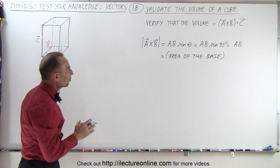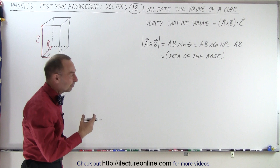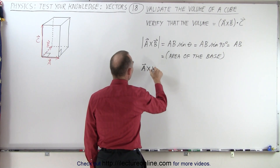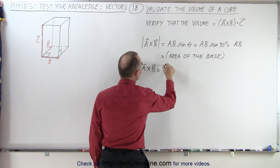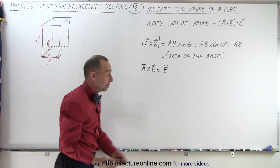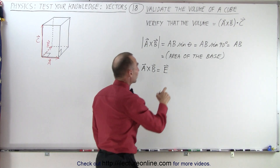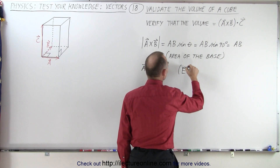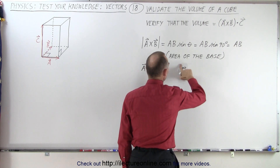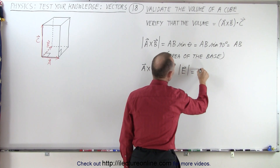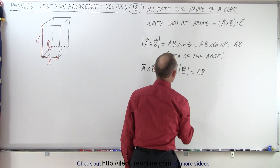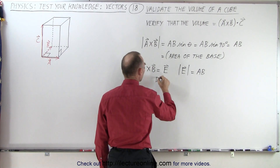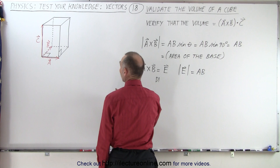Let's also represent that cross product by another vector e. So we can say that a cross b is equal to another vector — let's call it vector e — so that we know that the magnitude of e is equal to a times b, and the direction of e is perpendicular to the base.